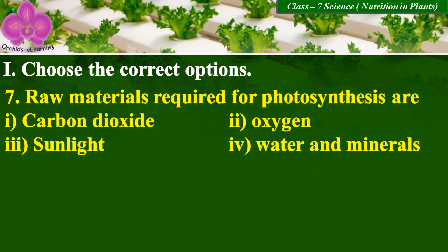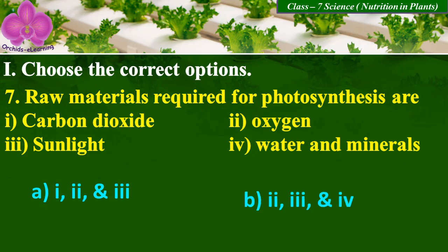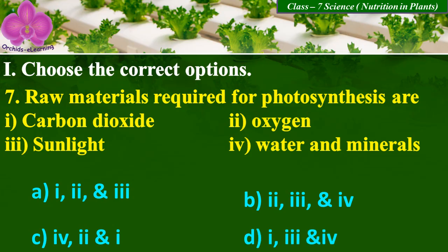Raw materials required for photosynthesis are carbon dioxide, oxygen, sunlight, water, and minerals. Option A: one, two, and three — carbon dioxide, oxygen, sunlight. Option B: two, three, and four — oxygen, sunlight, water and minerals. Option C: four, two, and one — water and minerals, oxygen, and carbon dioxide. Option D: one, three, and four — carbon dioxide, sunlight, water and minerals. The answer is D.